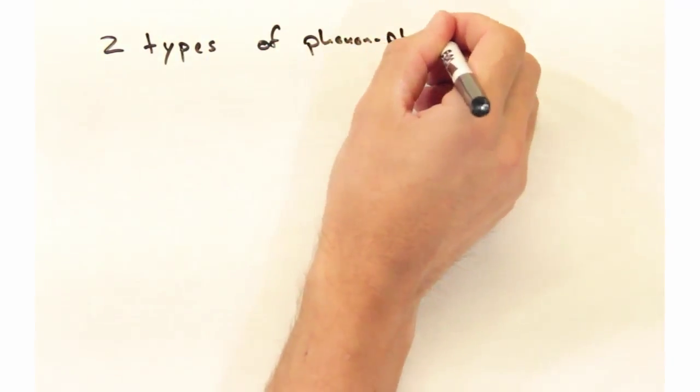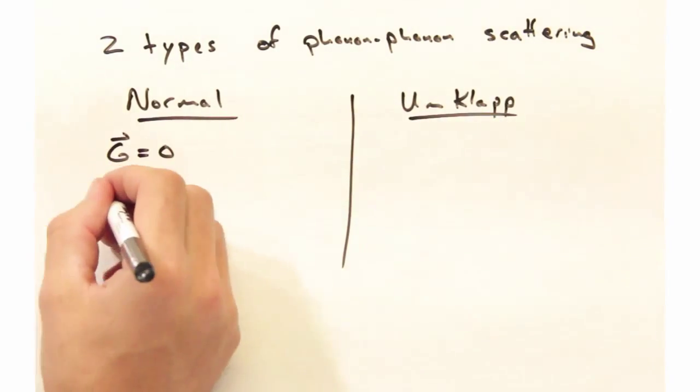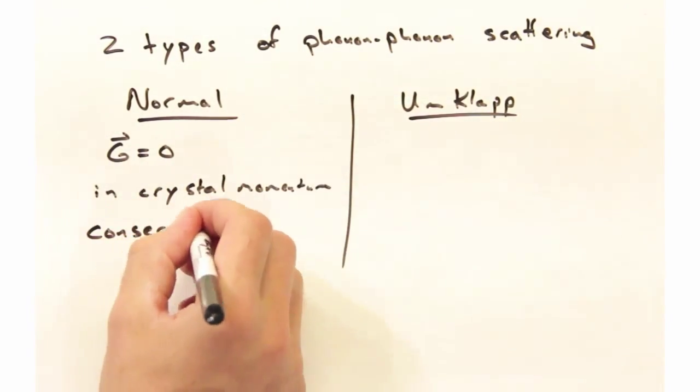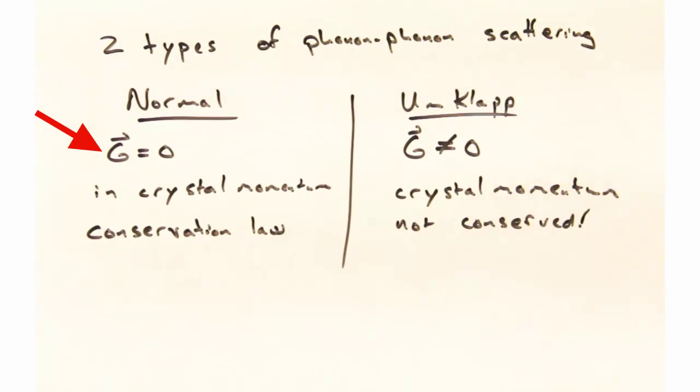Within phonon-phonon scattering, we have two types of scattering. First we have normal scattering, and then we have this other type called umklapp scattering. With normal scattering, g equals zero in the crystal momentum conservation law, which is to say that q1 plus q2 simply equals q3. On the other hand, in umklapp scattering, g does not equal zero in the crystal momentum conservation law. Let's take a look at an example to see how that plays out.